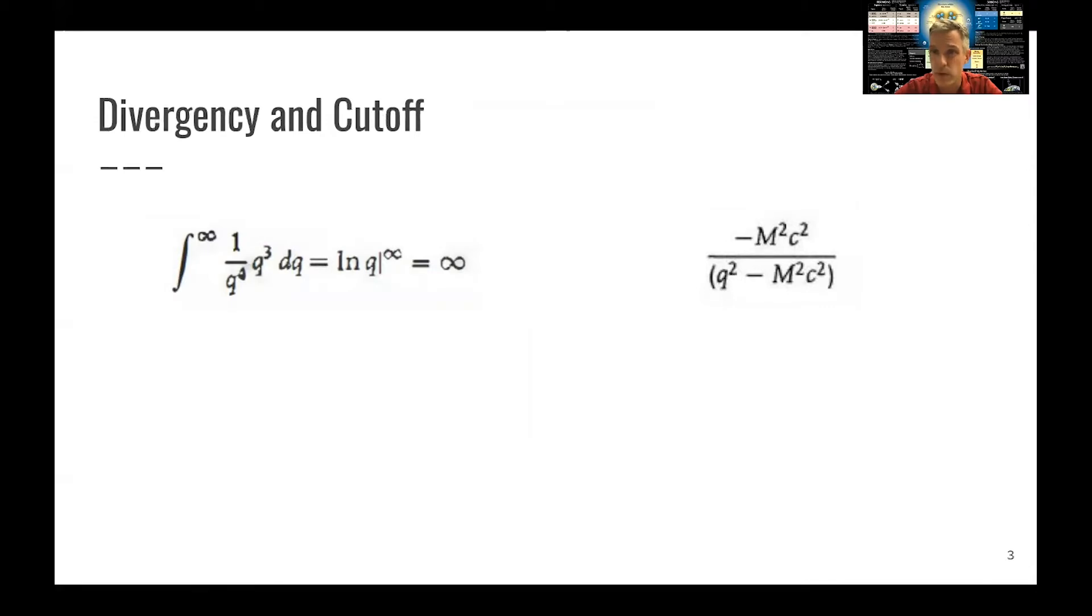That is a real problem. If you calculate the scattering process, the result is better not infinite. The cross-section shouldn't be infinite. The lifetime shouldn't be zero. That actually caused this entire theory to not really make much progress for quite some time, because you were not actually able to calculate anything.